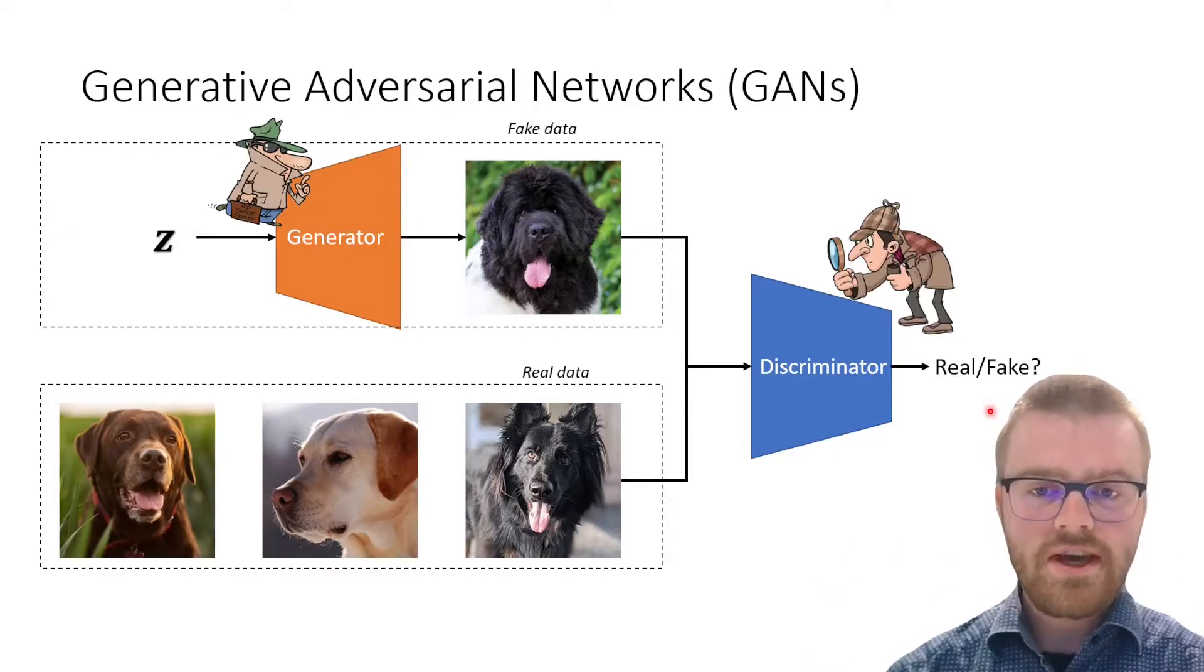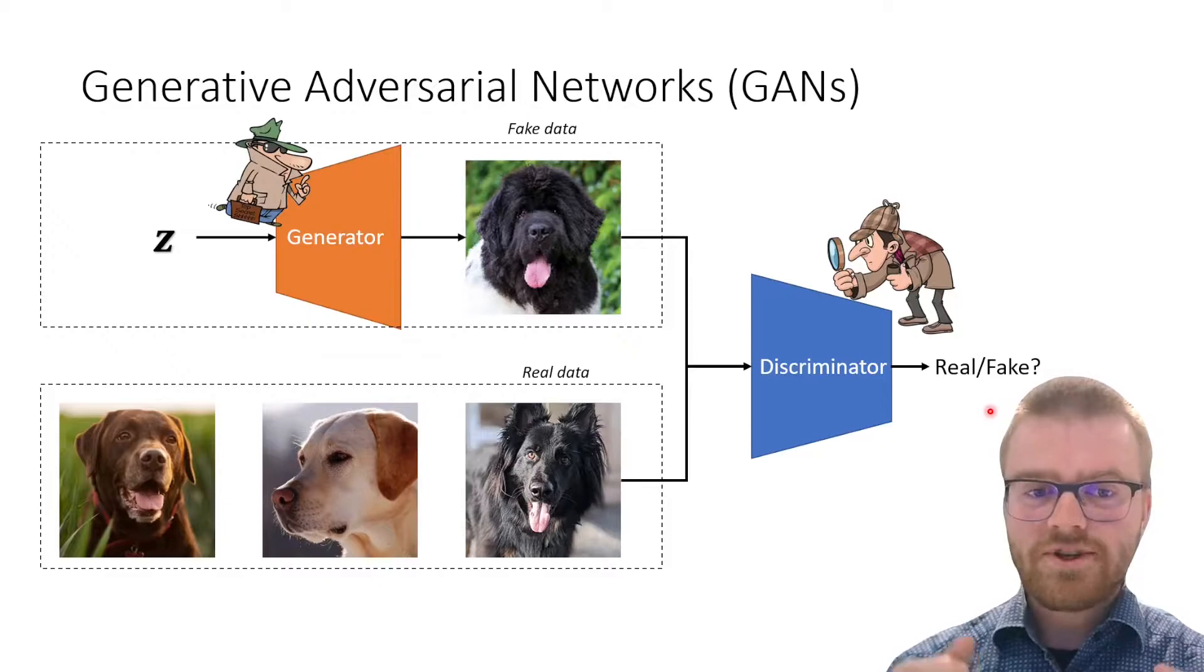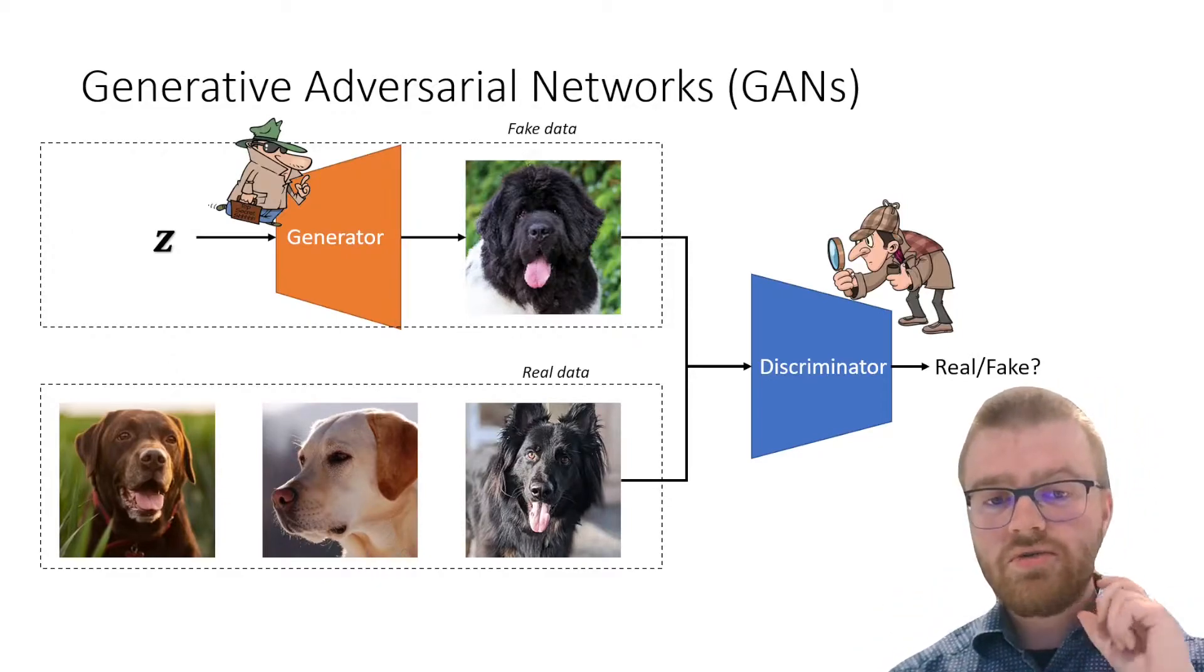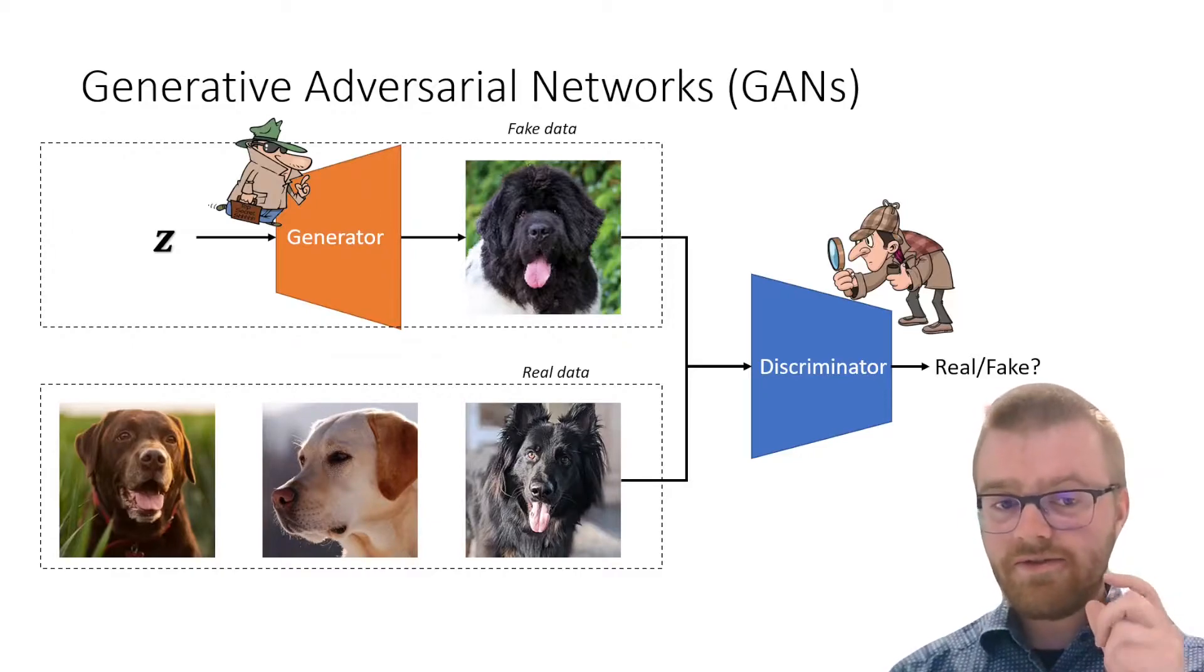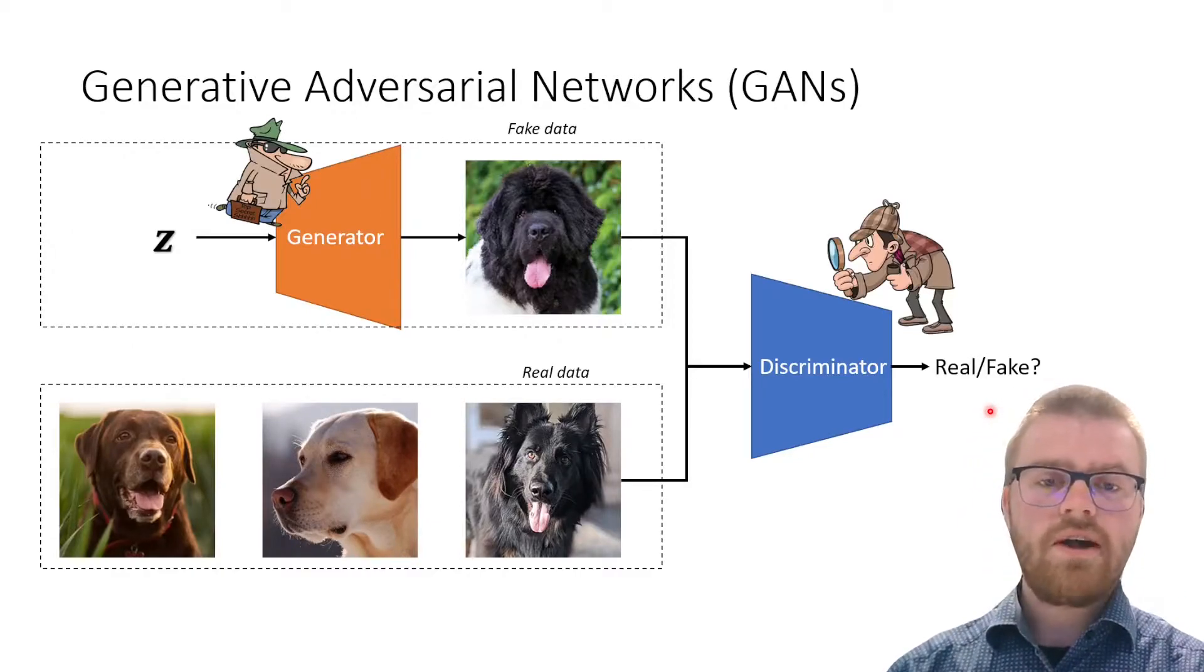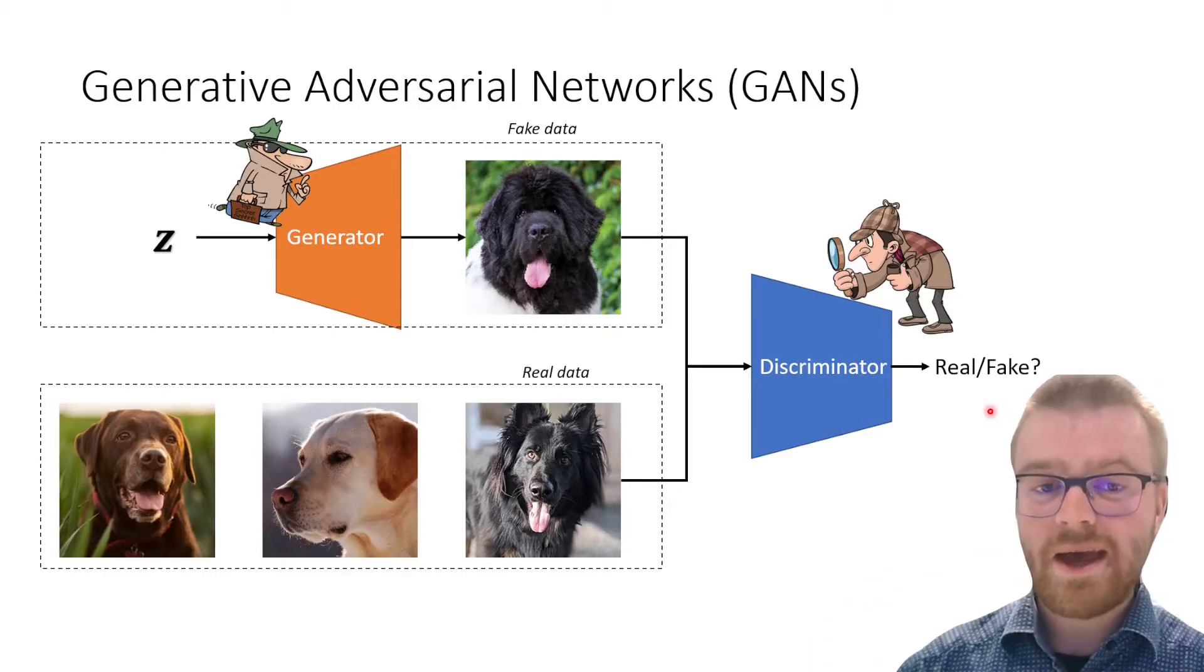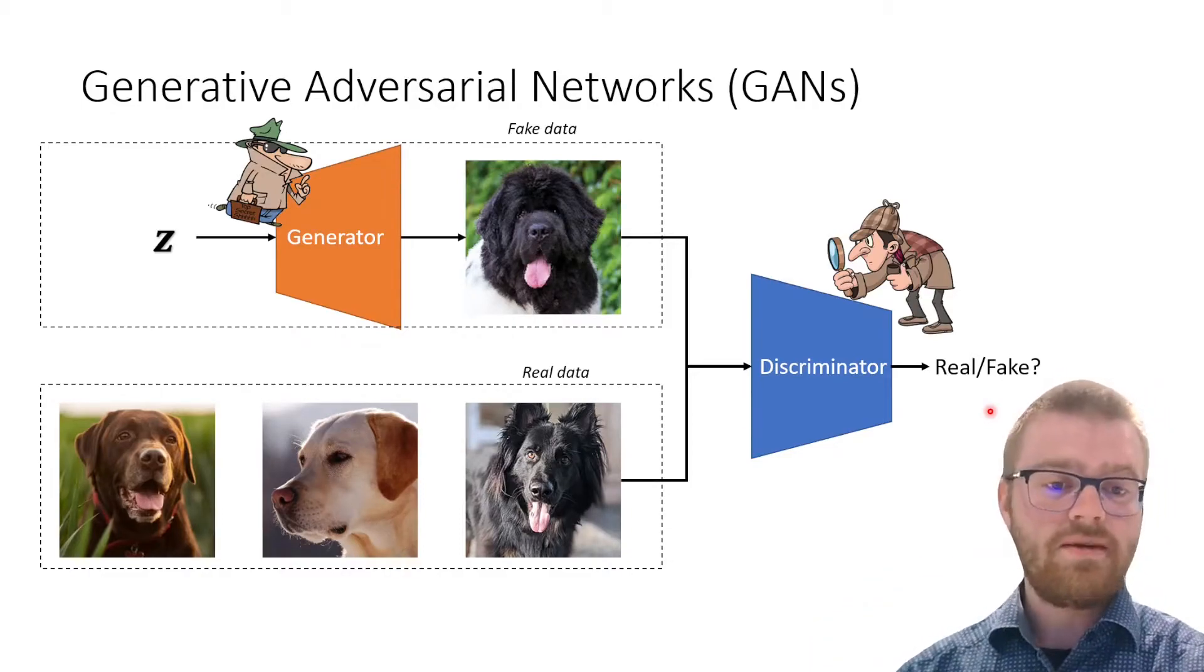And now we can see how these two networks are adversaries of each other. The discriminator is doing its best to find the fake generated data, while the generator is trying to hide the data as best as it can between the input data.